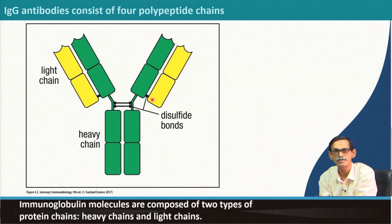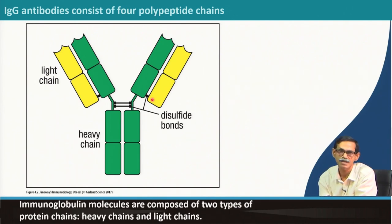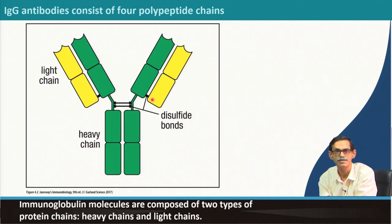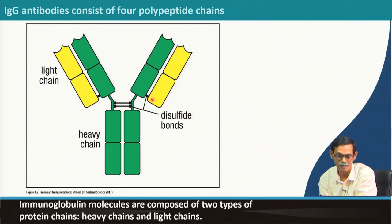Immunoglobulin molecules are composed of two types of protein chain: heavy and light. Two heavy chains and two light chains together compose the antibody molecule, which looks like the capital letter Y.